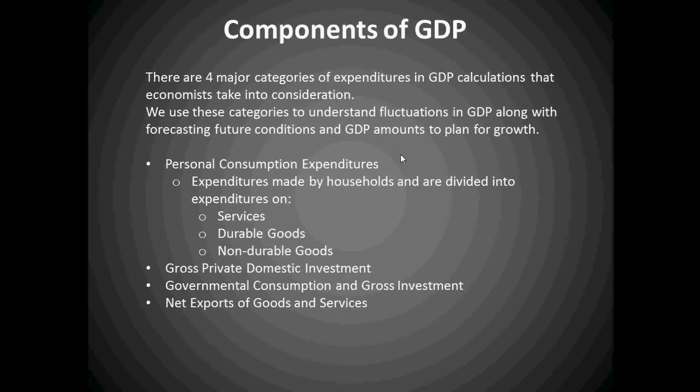Welcome to our second lesson on gross domestic product for a macroeconomic tutorial. Starting off, we're going to discuss the components of GDP. There are four major categories of expenditures in GDP calculations that need to be taken into consideration. We use these categories to understand fluctuations in GDP along with forecasting future conditions and GDP amounts to plan for growth.